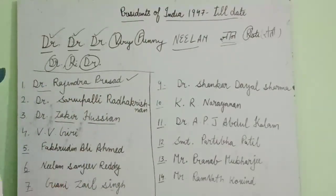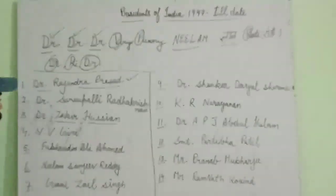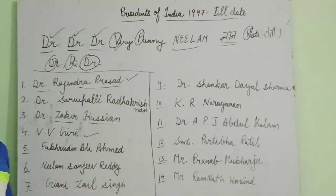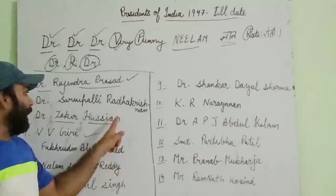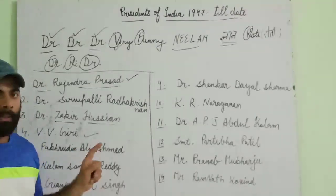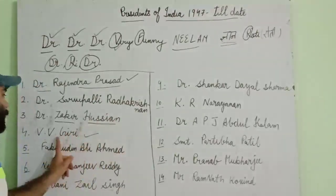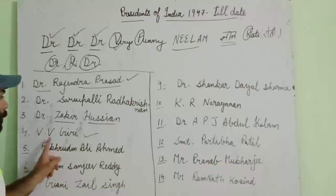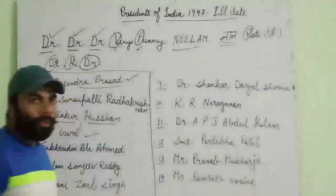Next in the mnemonic is 'V', which stands for V.V. Giri, the fourth president of India. V.V. Giri was the vice president at the time of Dr. Zakir Hussain, and when Hussain died in office, V.V. Giri became the president of India.